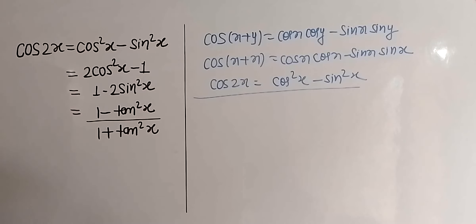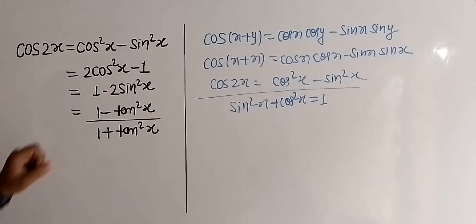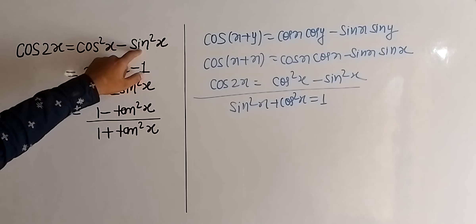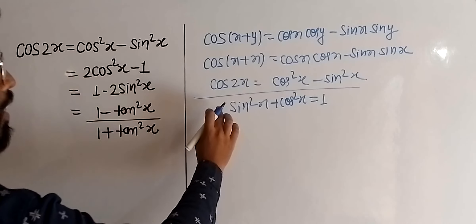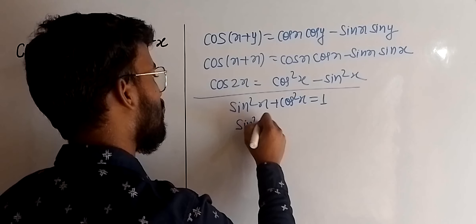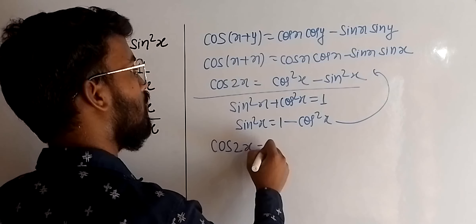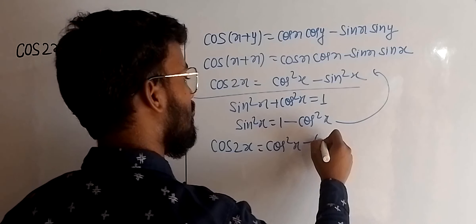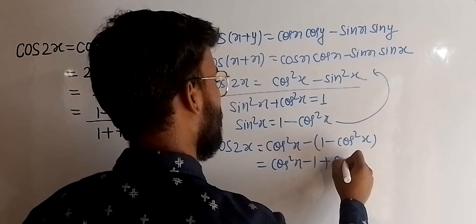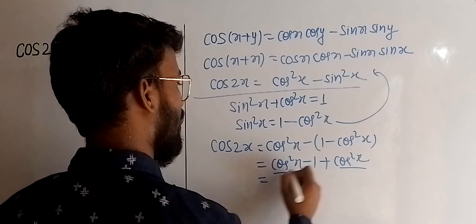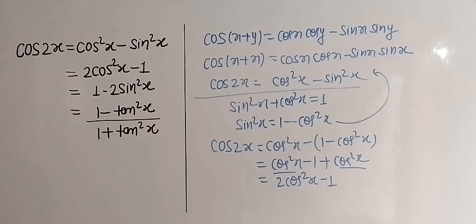Now let us move on to the second one. We know that sin²x + cos²x = 1. In this identity, we do not want sin²x, so let us eliminate sin²x by putting its value from the Pythagorean identity. From there, sin²x = 1 − cos²x. Putting this value in the first identity, we get cos2x = cos²x − (1 − cos²x), which becomes cos²x − 1 + cos²x = 2cos²x − 1.